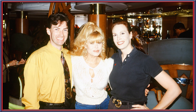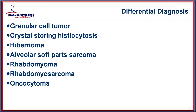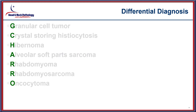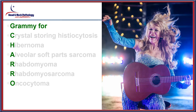The speaker concludes with a photograph of himself and his wife with Charo on a cruise, noting he tries to create mnemonics. In this case, taking the first letter of each tumor in the differential — Granular cell tumor, Crystal storing histiocytosis, Hibernoma, Alveolar soft part sarcoma, Rhabdomyoma, Oncocytoma — would get you a Grammy for Charo.